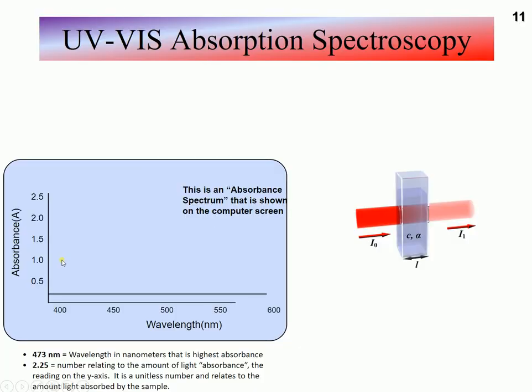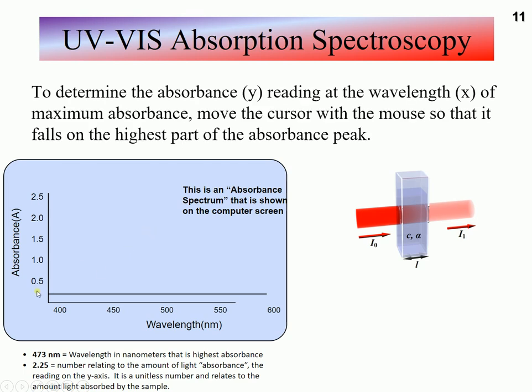And it puts that out into what's called an absorbance spectrum. And the spectrum is comprised of which wavelengths are there on the x-axis, typically done in nanometers.